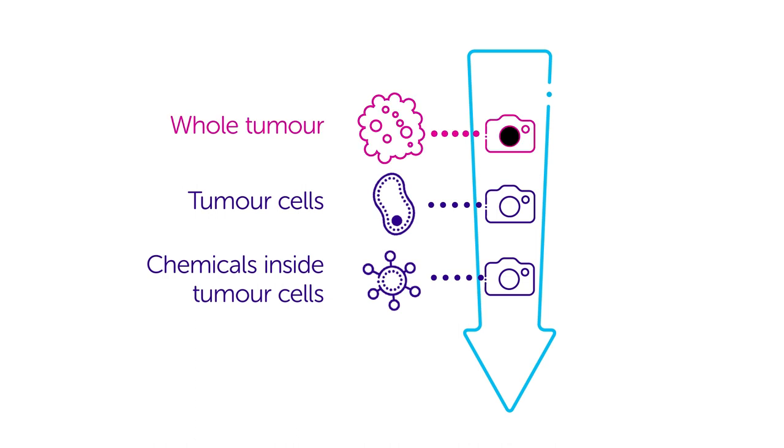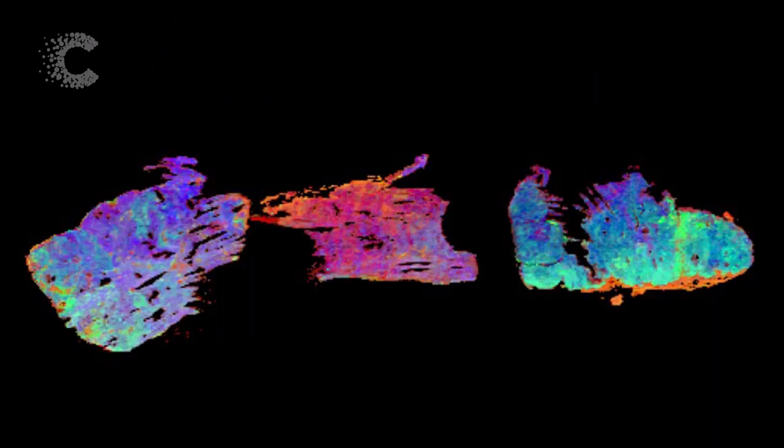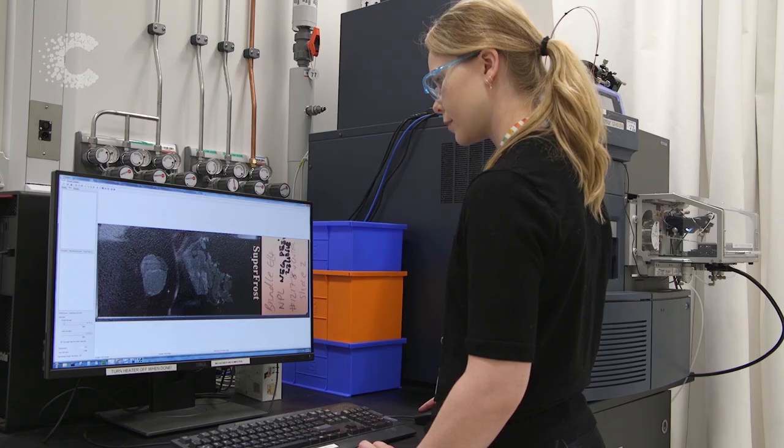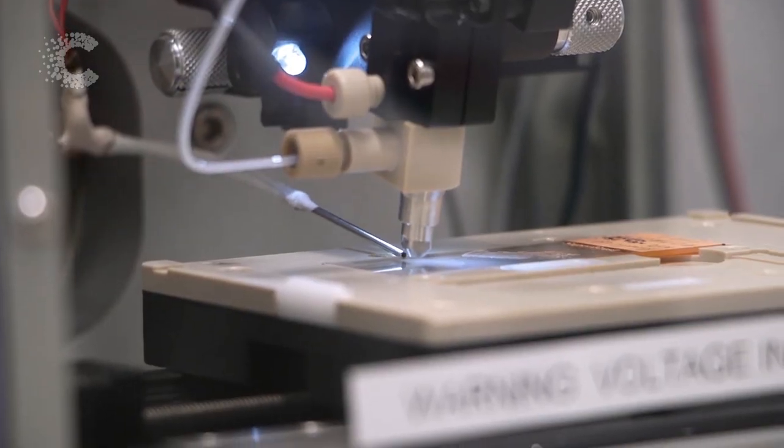So the first thing we do is image our whole tumour sections. Our initial chemical map gives us a really good understanding of broad areas of different chemistry within the same tumour.